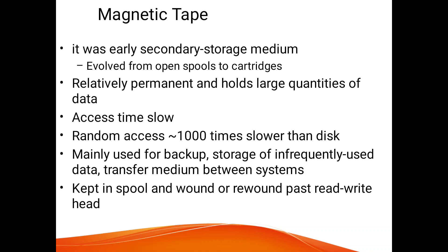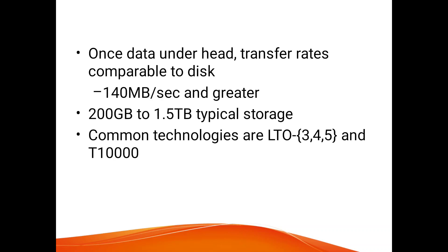Next is the magnetic tape, which was an early secondary storage medium. It is relatively permanent and holds large quantities of data. Access time is slow — random access is nearly 1000 times slower than a disk drive. Magnetic tape is mainly used for backup storage of infrequently used data and as a transfer medium between systems. Data is kept on a spool and wound or rewound past a read/write head. Once data is under the head, transfer rate is comparable to disk at 140 MB per second. A common technology is LTO (Linear Tape-Open).